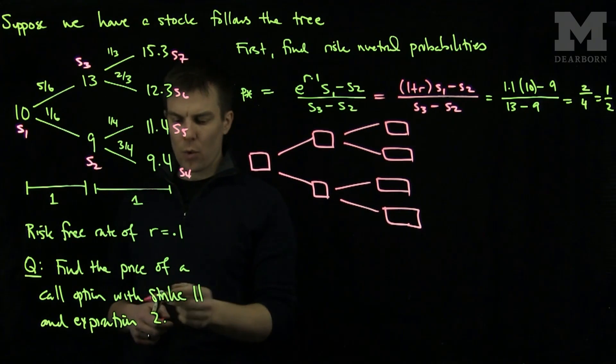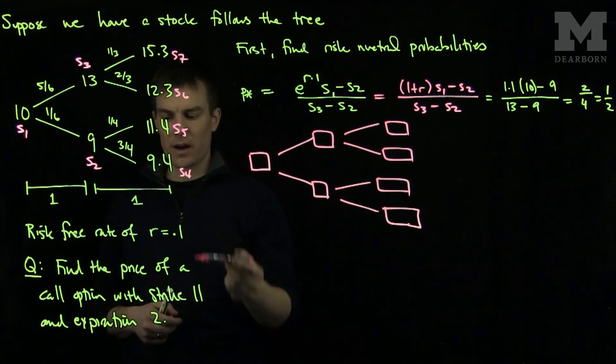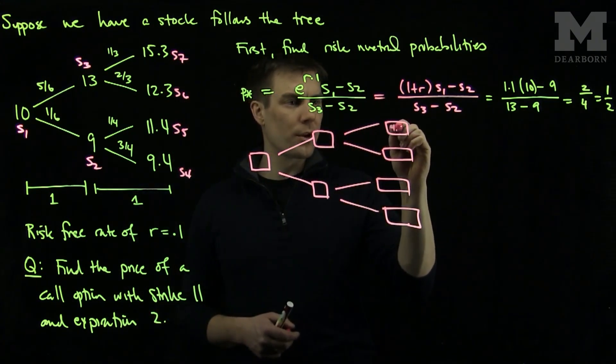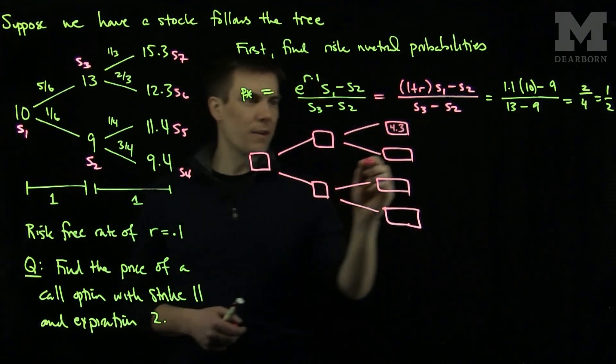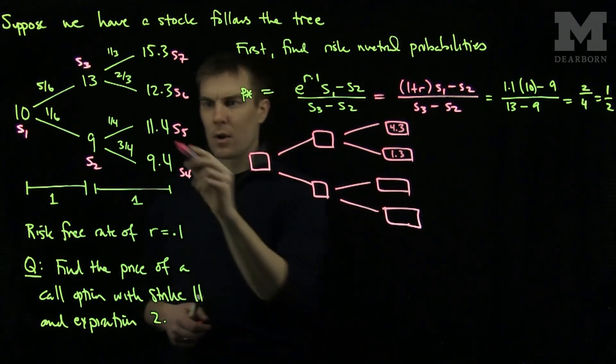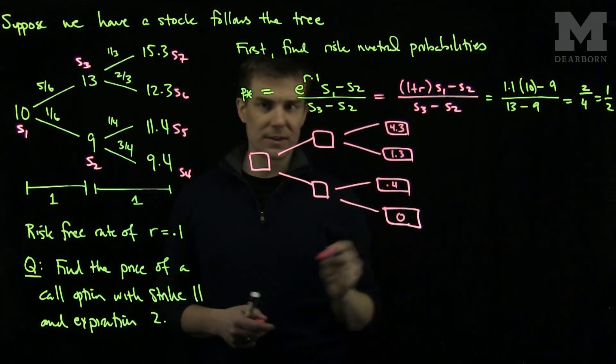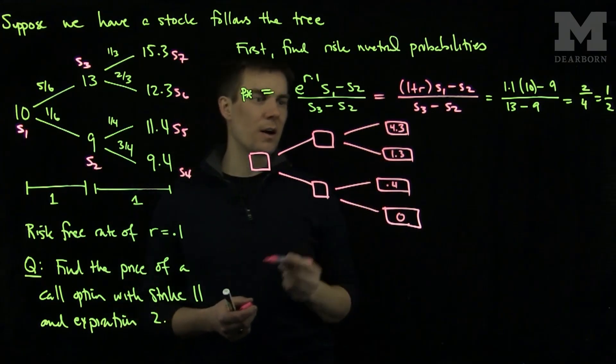So the call option has a strike price of 11 so let's fill in the values of the call option at the terminal times. So the strike price is 11. We will have a 4.3 over here. We will have a 1.3 over here. We will have a 0.4 over here. And we will have a 0 over here. So those are the values of our call option at the terminal times.